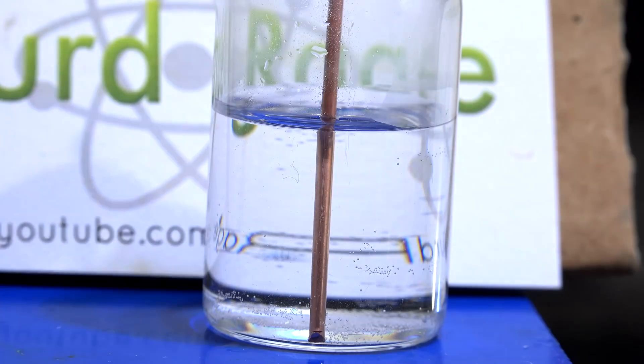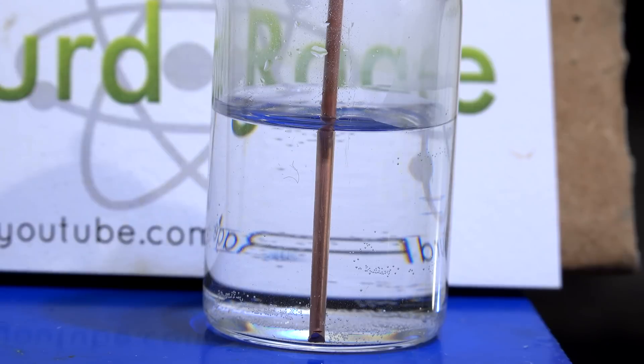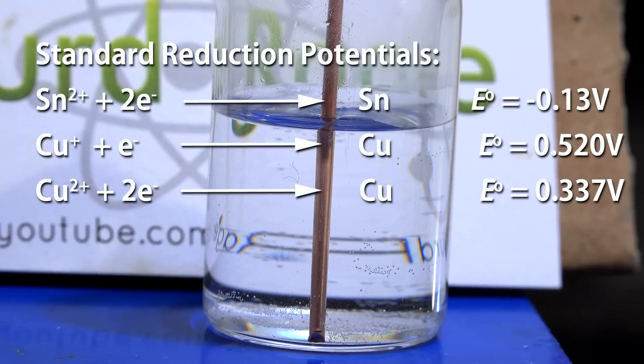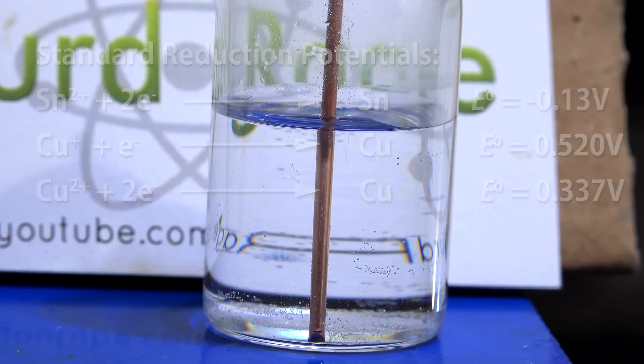Now if you put in copper metal nothing will happen. This makes sense since the reduction potential for copper is higher than that of tin. We'll never be able to displace copper with tin, but there is a trick we can do.